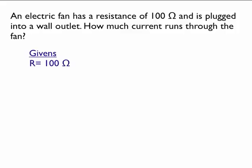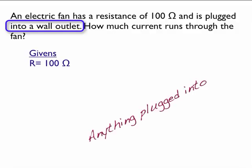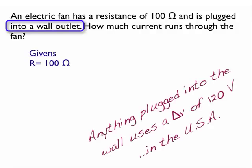The second given is not so obvious. There's an implied given here: into the wall outlet. That means it's plugged into the wall. In the United States, everything plugged into the wall uses 120 volts of electricity. So that's an implied given. The voltage, or the change in voltage, is 120 volts.